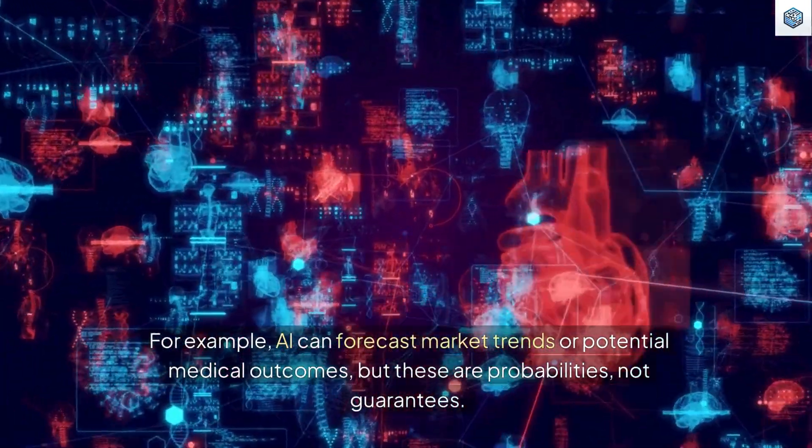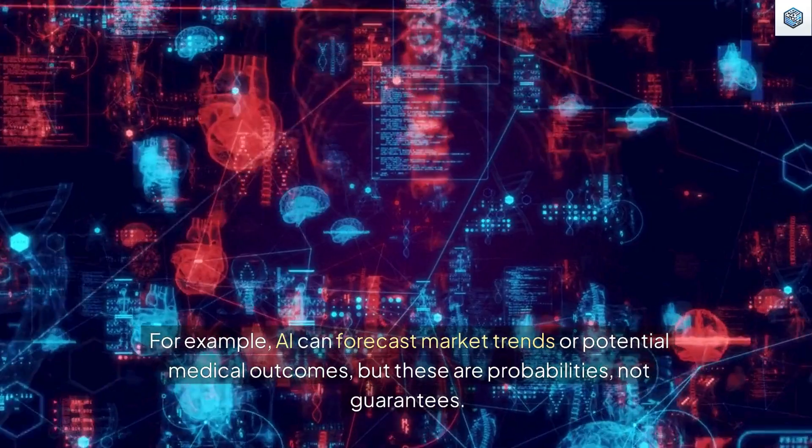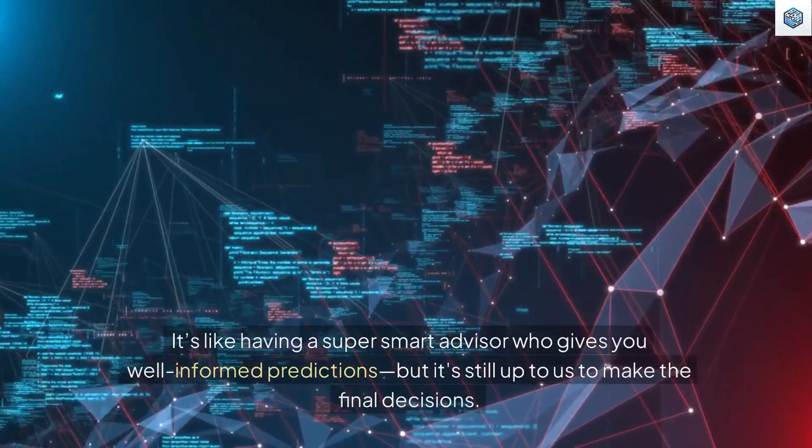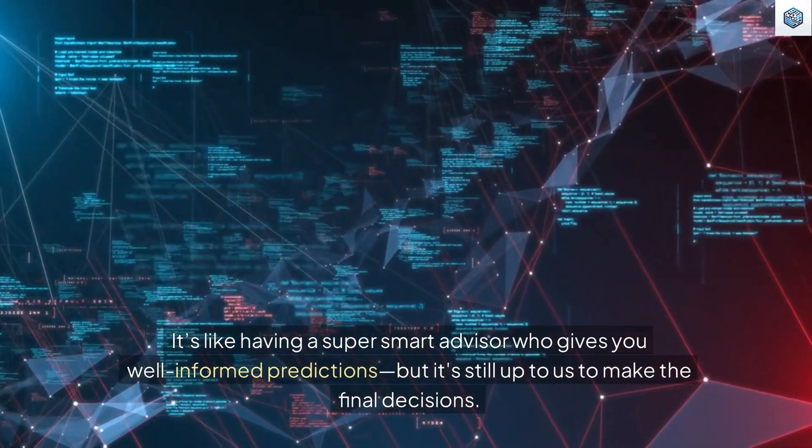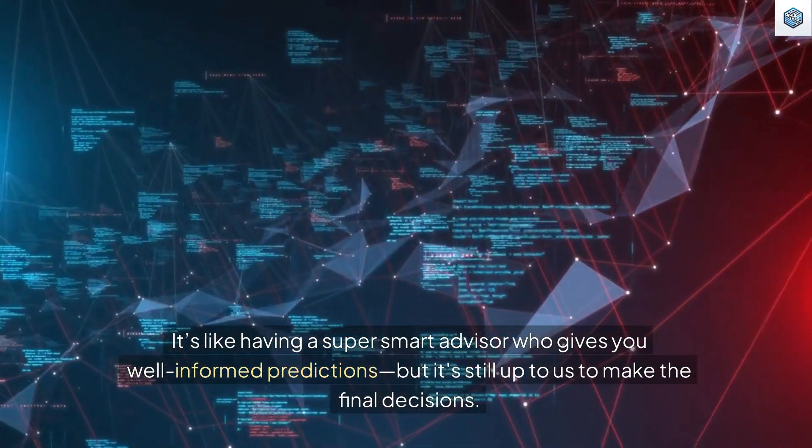For example, AI can forecast market trends or potential medical outcomes, but these are probabilities, not guarantees. It's like having a super smart advisor who gives you well-informed predictions, but it's still up to us to make the final decisions.